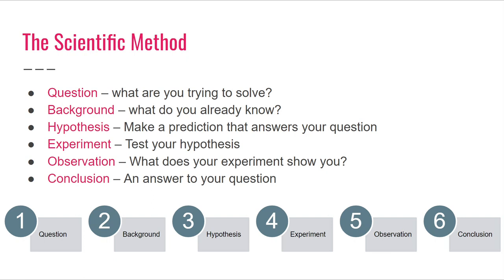The best way to test your hypothesis is to conduct an experiment. A good experiment involves an independent variable and a dependent variable. The independent variable is the variable that you manipulate, and the dependent variable is the variable that changes based on your independent variable. For example, if you're creating an experiment based on whether exercise helps heart health, the independent variable would be whether the patient exercises or not, and the dependent variable would be heart health, determined by heart rate and pumping.